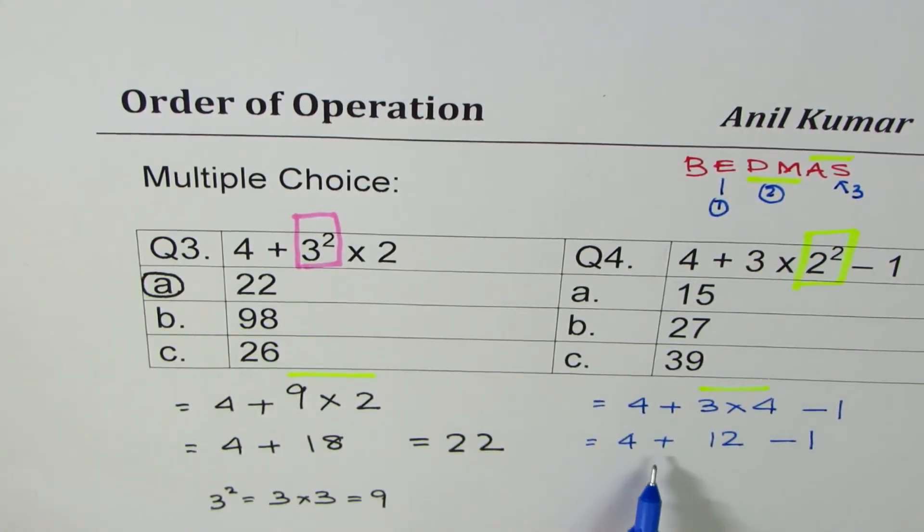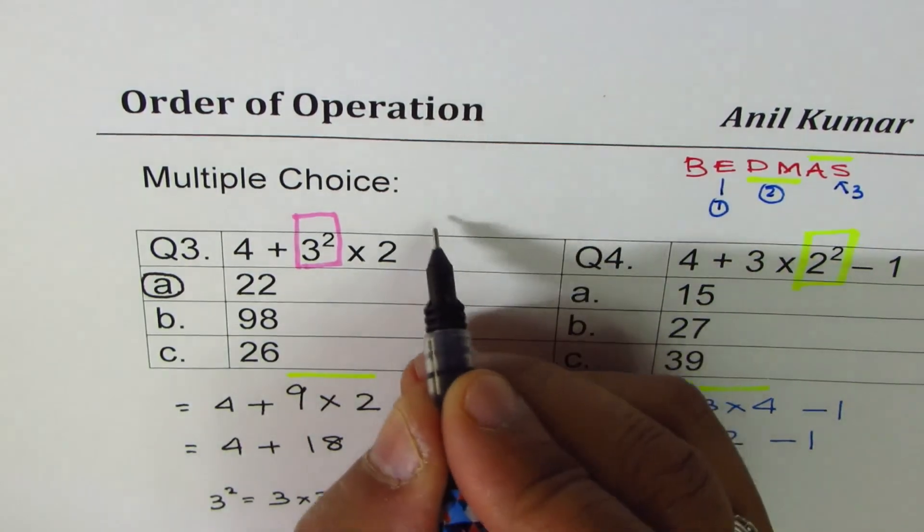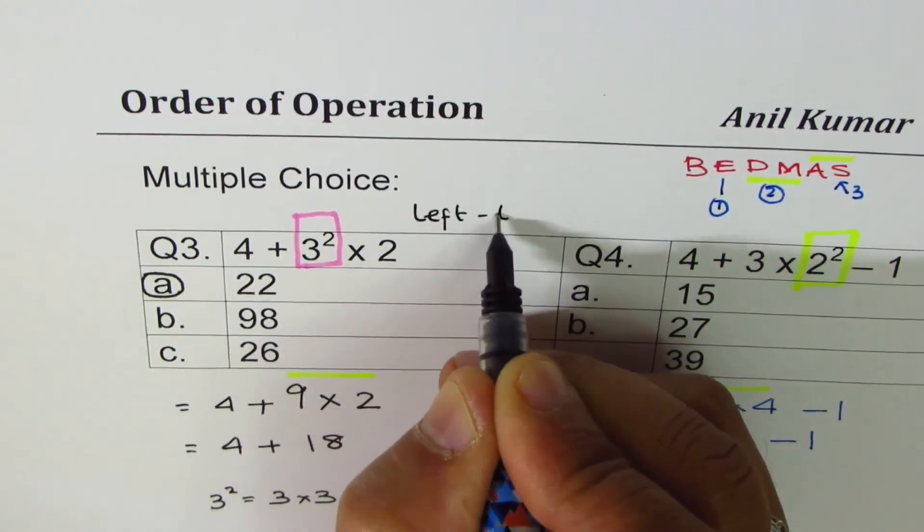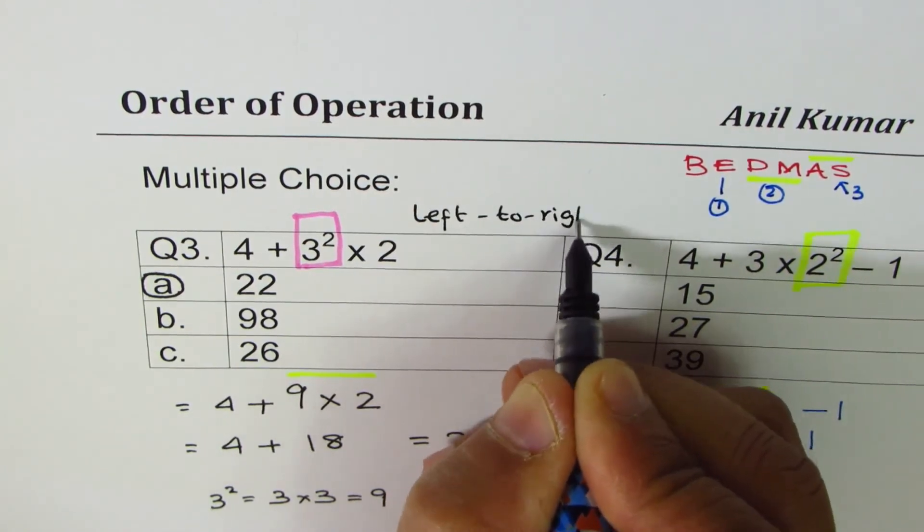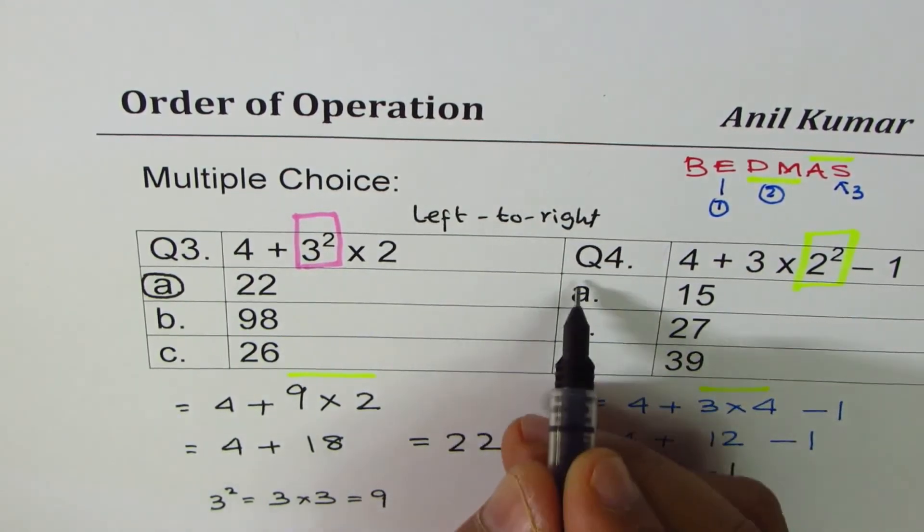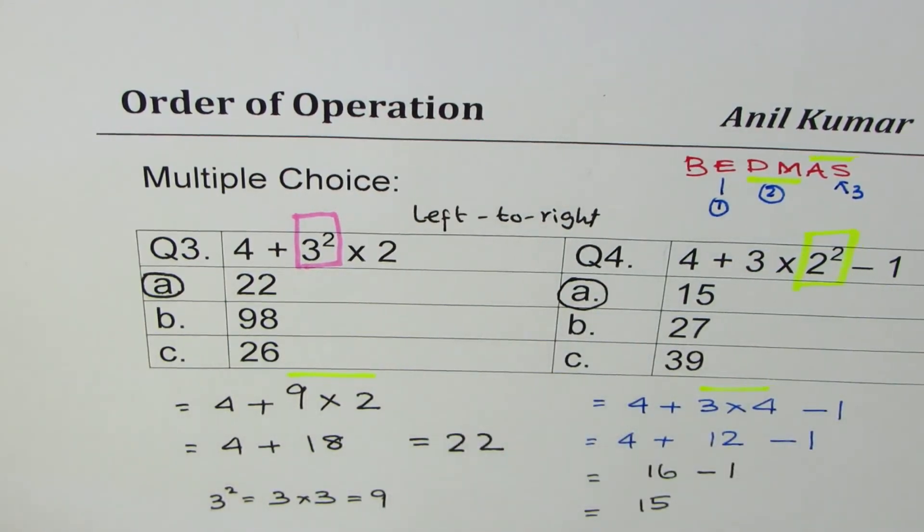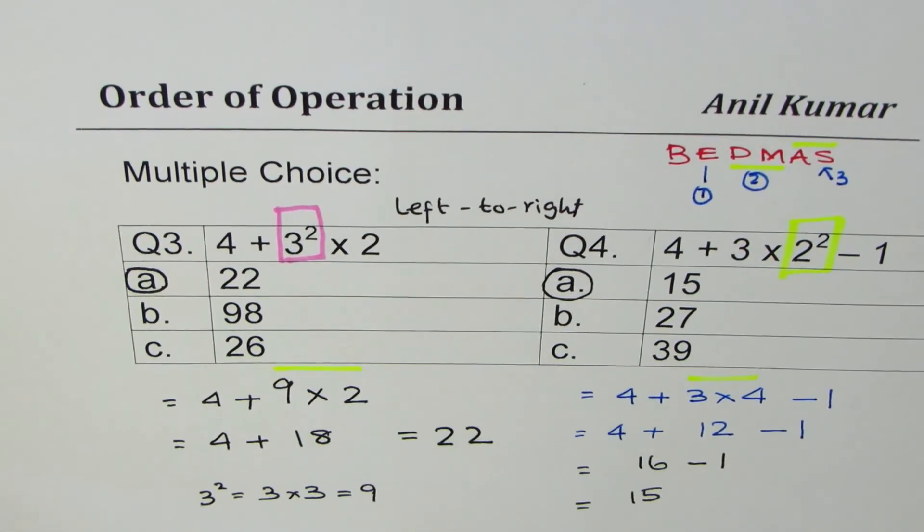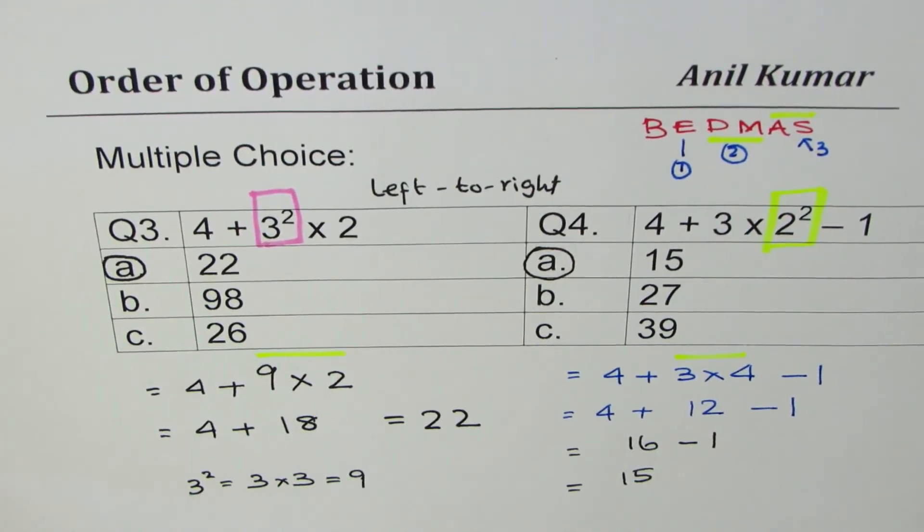Minus 1. Now here we have both addition and subtraction. We will go from left to right. Remember, we have to go always from left to right. So 4 plus 12 is 16, write 16 minus 1, and that gives us 15. So A is the correct answer for us. So that is how you could perform order of operation and get the right results in such situations.